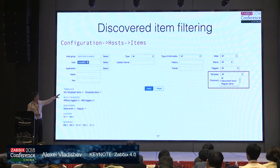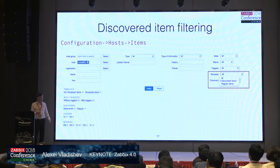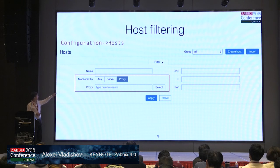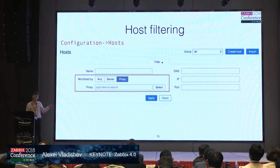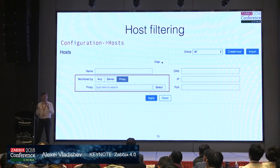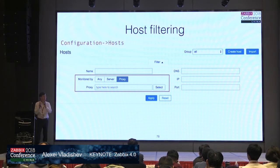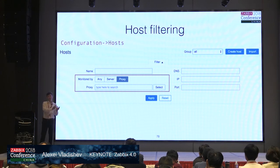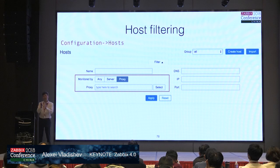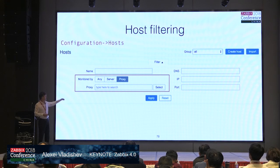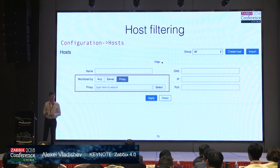In the list of items, it's now possible to filter by discovered items so we can clearly see what items were discovered. In host filtering, we have filter by proxy, which is really nice — this way we can easily move a whole group of hosts from one proxy to another proxy. We select hosts by one proxy, select all, and assign them to another proxy — very easy with just a few mouse clicks.